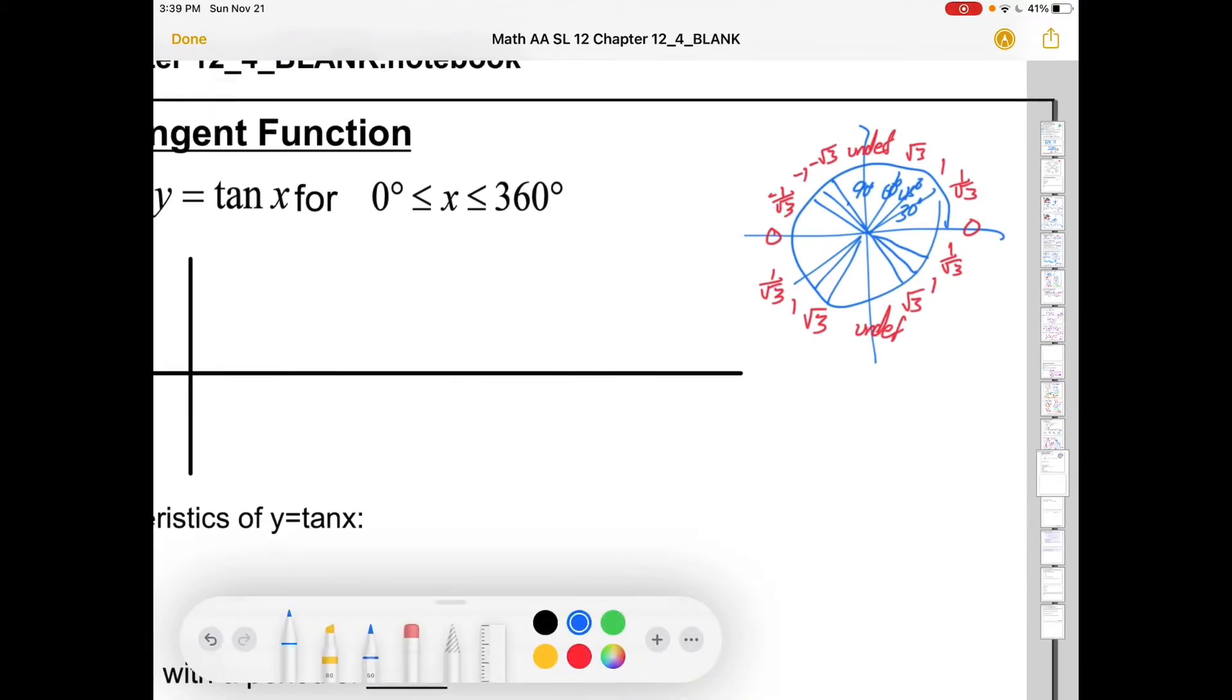There's a unit circle with some tangent values on it. Obviously there are infinitely many, but let's just try and make a graph out of that. I'm going to mark 90, 180, 270, and 360.